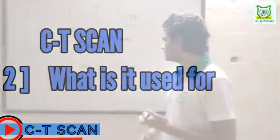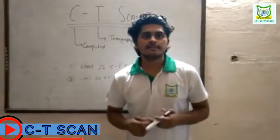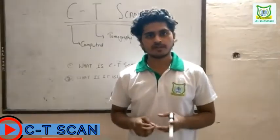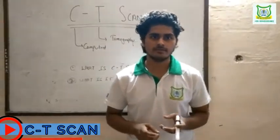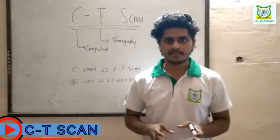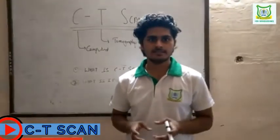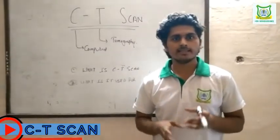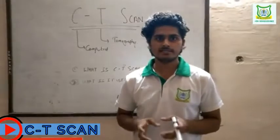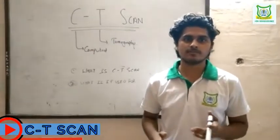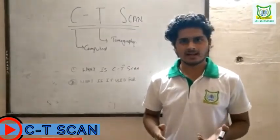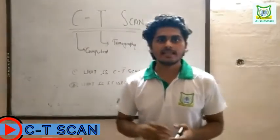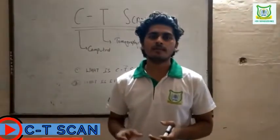What is it used for? CT scans detect bone and joint problems like complex bone fractures and tumours. If you have a condition like cancer or heart disease, a CT scan can easily spot it. They show internal injuries and bleeding, such as those caused by a car accident or any type of accident. They can also help to locate blood clots.